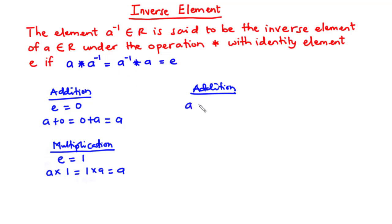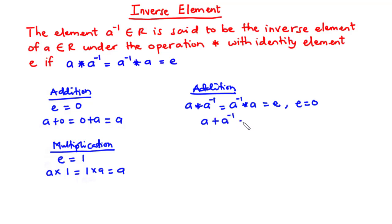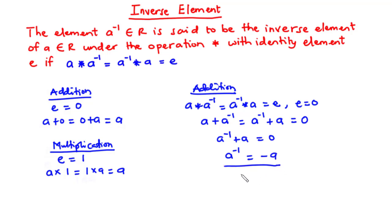Now let's find the inverse element under addition. We know that a star a-inverse equals a-inverse star a equals the identity element. Under addition the identity element is zero, so a plus a-inverse equals a-inverse plus a equals zero. Transposing a to the right-hand side, a-inverse equals negative a. So the inverse element under addition is negative a, such that a plus negative a equals zero.